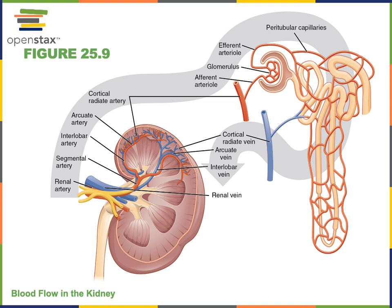Then blood will flow from the peritubular capillaries into venules that drain into the cortical radiate veins and arcuate veins. The arcuate veins then join together to drain into interlobar veins, and the interlobar veins drain into segmental veins that then come together to drain into the renal veins, and the renal veins drain into the inferior vena cava.